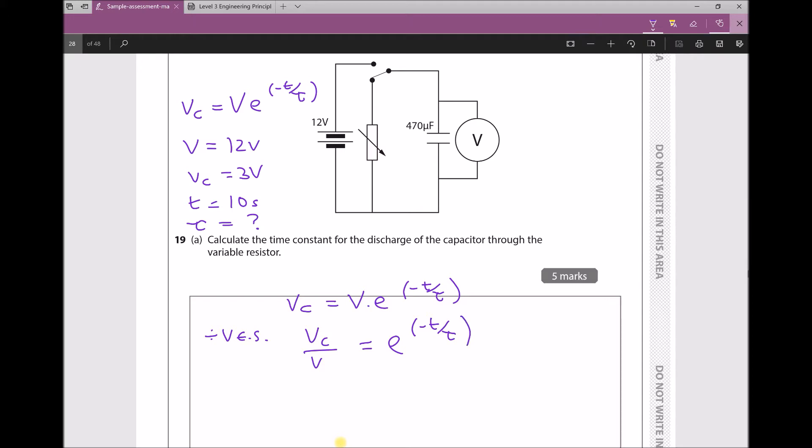Now things may appear a little bit tricky here, but the important thing to remember is that a natural logarithm is an inverse of an exponential. So I'm going to take the natural log of each side. When we take the natural log of the left-hand side, we just get ln(VC/V). And when we take the natural log of the right-hand side, we lose that exponential and we're left with -T/τ.